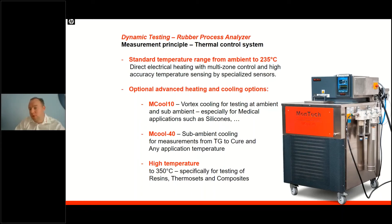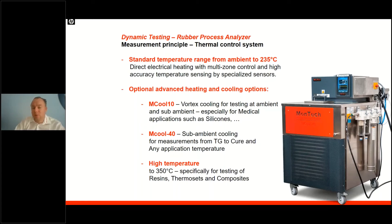We also have our MCOOL-40, which is our chiller system for sub-ambient cooling down to minus 40 degrees C, reaching almost glass transition temperature for several polymers. We also offer high temperature options for resins, pre-pregs, thermosets, and composites up to 350 degrees C.